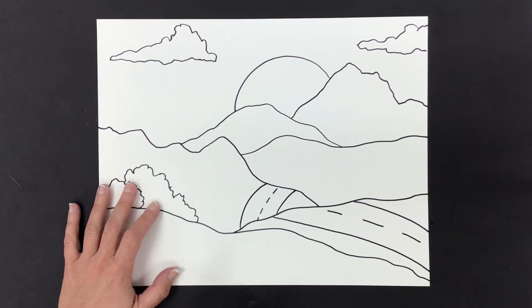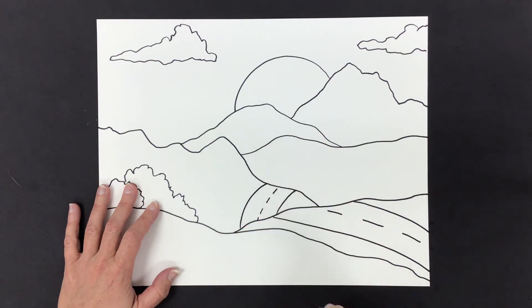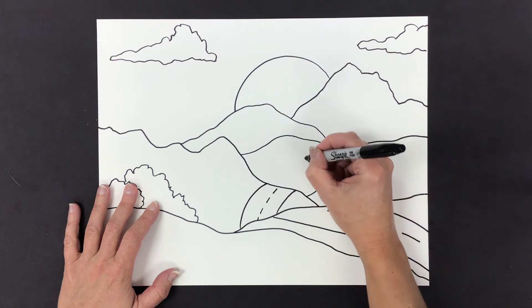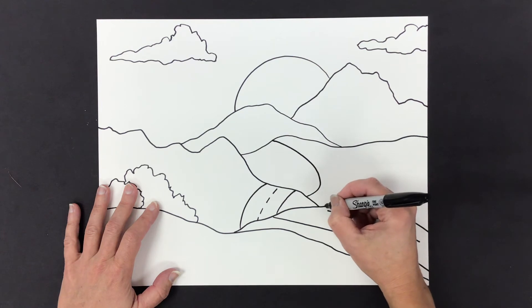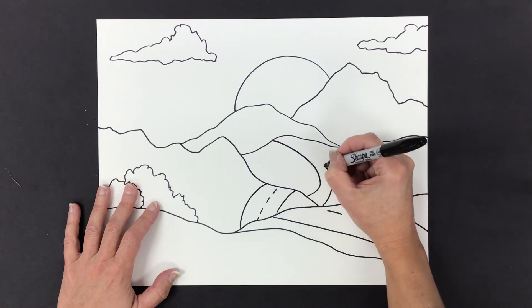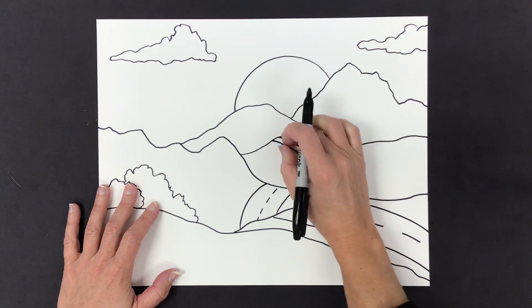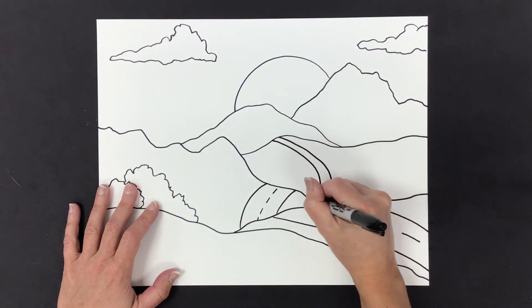My road continues over this hill and goes down the other side. But where does it start to come back up? It's going to come back up over here. And watch what I do. It's going to be thicker where it's closer to me. But as it gets further away, I'm going to taper my road. That means make it thinner. So it started out thick here and got thinner right there.